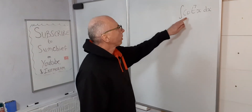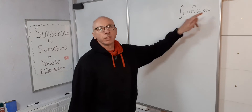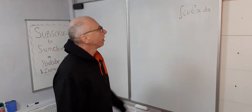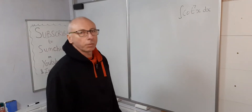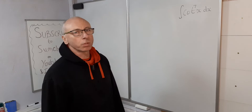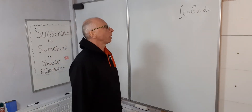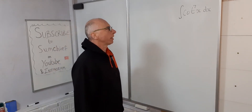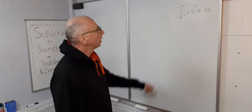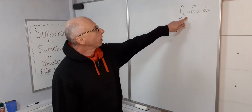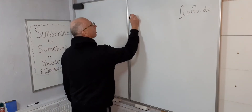We're going to integrate cot⁷(x) dx. We know we can't integrate this straight away, so we're going to have to work out some sort of trig identity, maybe a u-substitution as well after that, and see where we end up. First of all, let's have a look at cot(x).